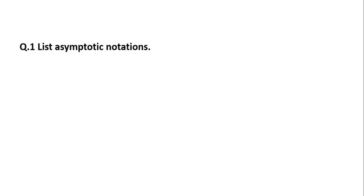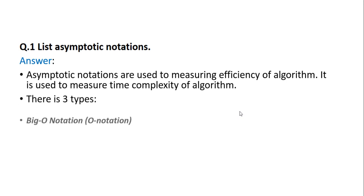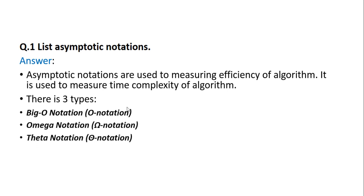Question number 1: List asymptotic notations. Asymptotic notations are used in measuring the efficiency of algorithms. They are used to measure the time complexity of algorithms. There are 3 types: first is Big O notation, Omega notation, and Theta notation. Write the name and the symbol used for each notation.